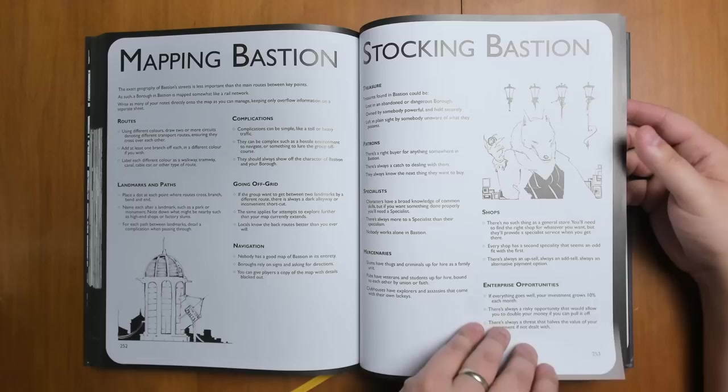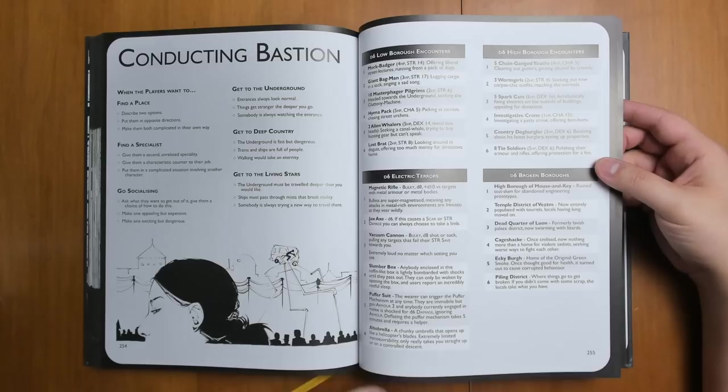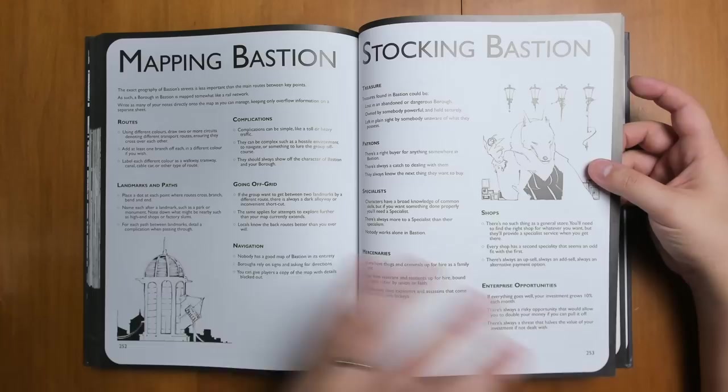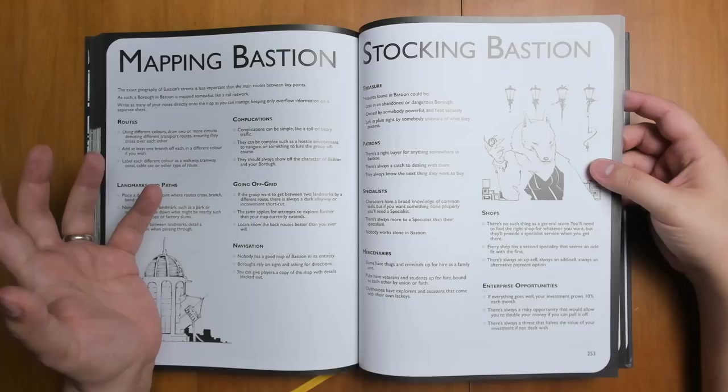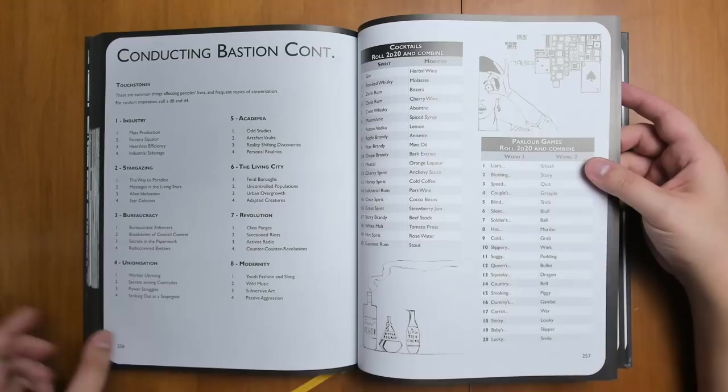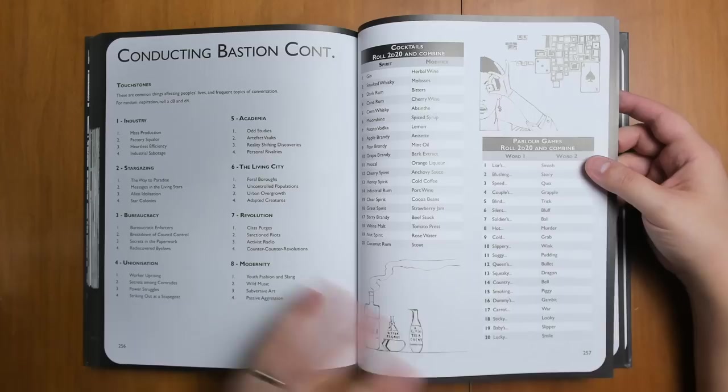We have advice on mapping Bastion, stalking the city, and running or conducting the city. We have some built-in encounters to give you a sense of the sort of things that might be there in different parts of the city. I wish there was pictures of what mapping Bastion looked like. The instructions are pretty clear. But just having a concrete picture of that done with the routes all mapped out would, I think, be really helpful. I was a little surprised to see that there wasn't actually a picture of it in here. Although there are, of course, videos on Chris's channel of him doing that.